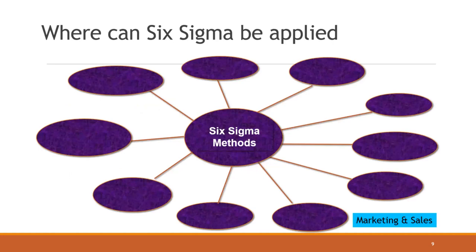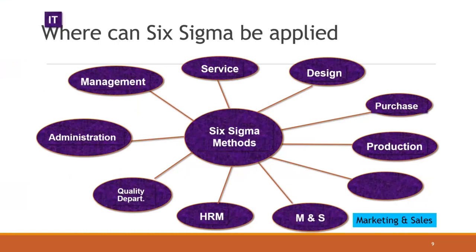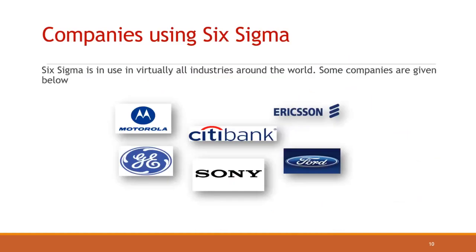Six Sigma can be applied anywhere in the organization — in production, design, service, purchasing, human resource management, administration, quality department, marketing, sales, and IT. Every part of an organization can implement Six Sigma for quality improvement. Companies that commonly use Six Sigma include Motorola, General Electric, Citibank, Sony, Ericsson, and Ford.